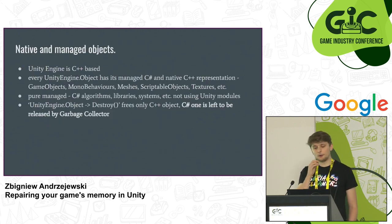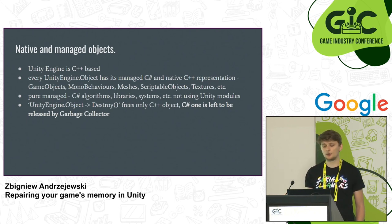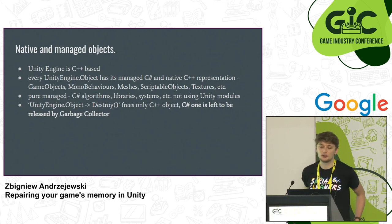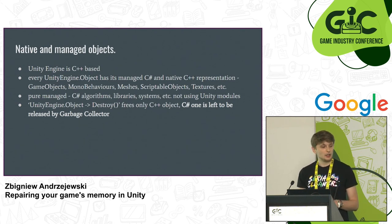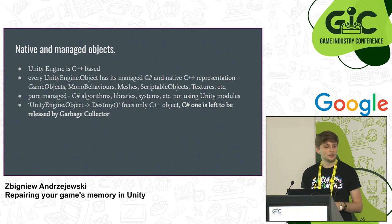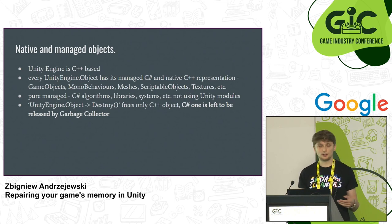Let's cover some other notions: native and managed objects. Unity Engine is C++ based. When you create managed objects, they also have a C++ representation. It's good to remember this because all Unity Engine objects the engine provides — like GameObjects, MonoBehaviours, meshes, ScriptableObjects, textures, audio clips, and so on — have this dual nature. We also have pure managed code, like C-Sharp algorithms or external libraries that don't use Unity Engine objects.